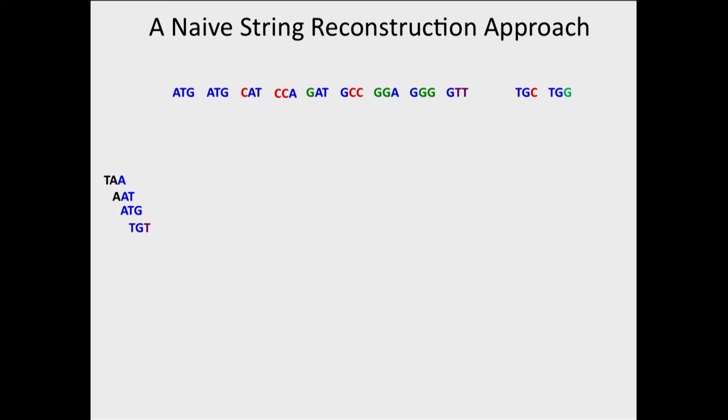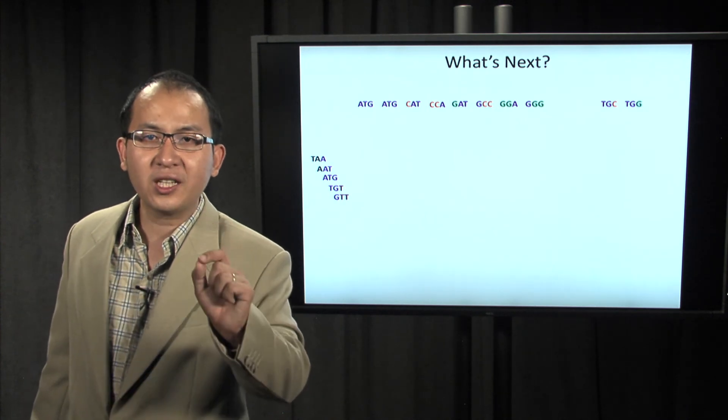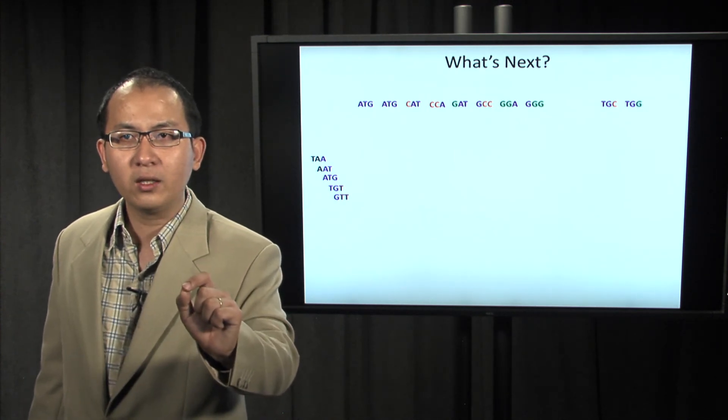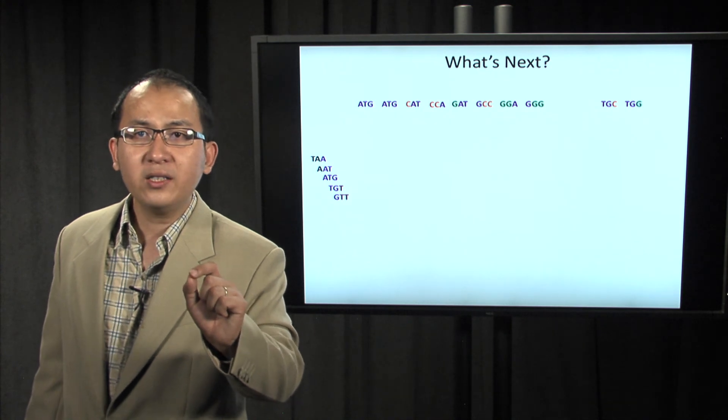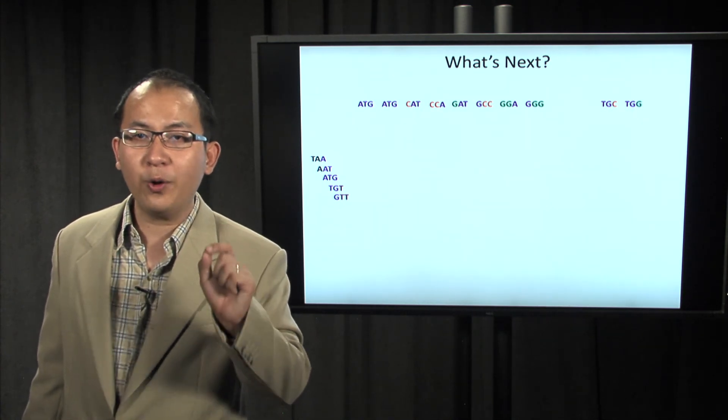So the next k-mer should start with GT. Here we have one k-mer starting with GT, and the next one, TT. So the next k-mer should start with TT. But, in our collection, there is no k-mer starting with TT.